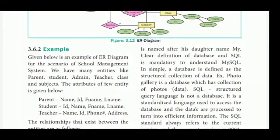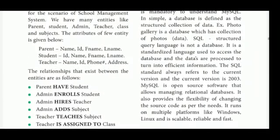The attributes of a few entities are given below. Parent: name, ID, first name, last name. Student: ID, name, first name, last name. Teacher: name, ID, phone, address.